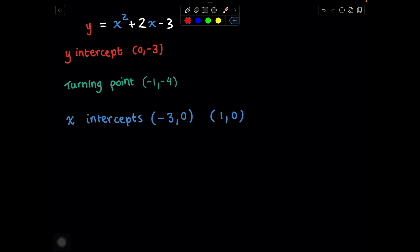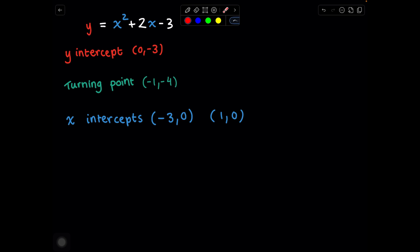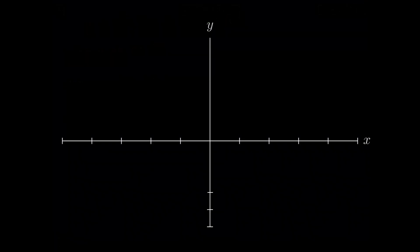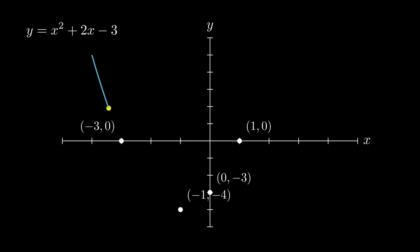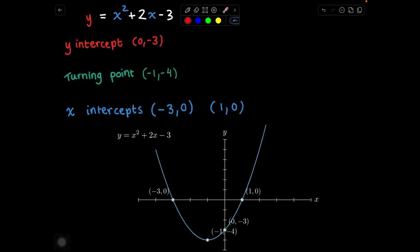Now that we have all of our important points — our y-intercept at 0, negative 3, our turning point at negative 1, negative 4, and our x-intercepts at negative 3, 0 and 1, 0 — we can plot them on a Cartesian plane and trace our parabola through them. And here we have our parabola. I hope you can draw your first parabola now. Please watch my transformations video if you want to learn how to flip this parabola, make it go upside down, move it left and right, up and down, and stretch it as well.